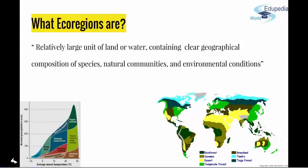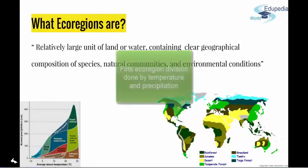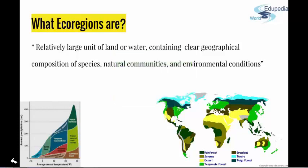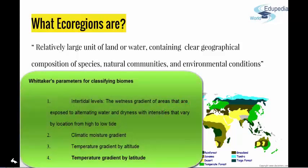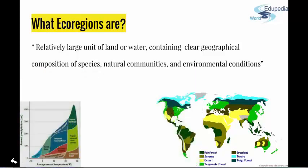Whittaker, whose system is still most used, classified biomes using two abiotic factors: precipitation and temperature. Whittaker's parameters for classifying biomes include intertidal levels, climatic moisture gradient, temperature gradient, altitude, and latitude. So altogether, ecoregions or biomes are areas with similar climate and species assemblage — for example, deserts, tundra, taiga, and rainforests all share similar climate and species assemblage.